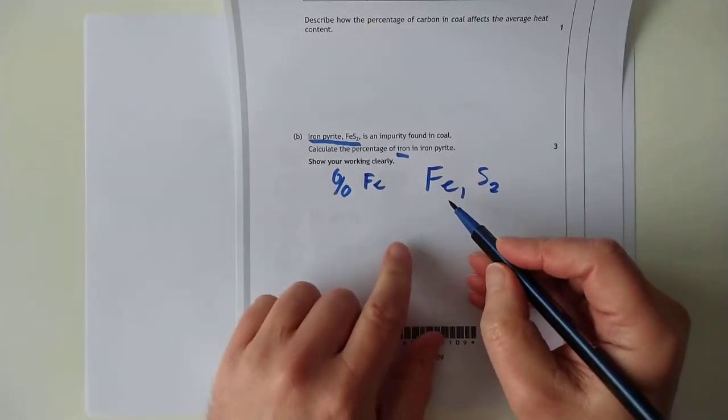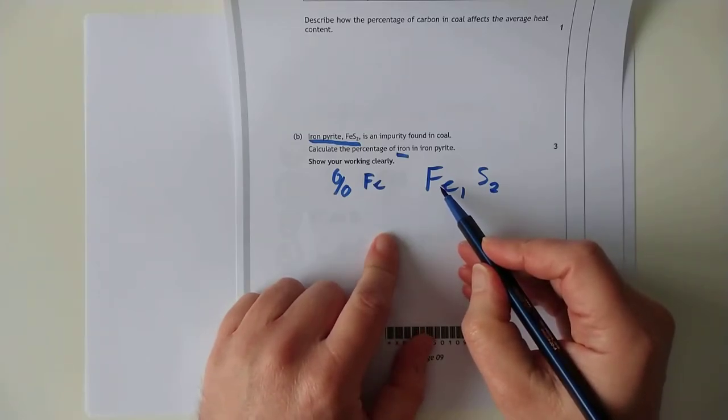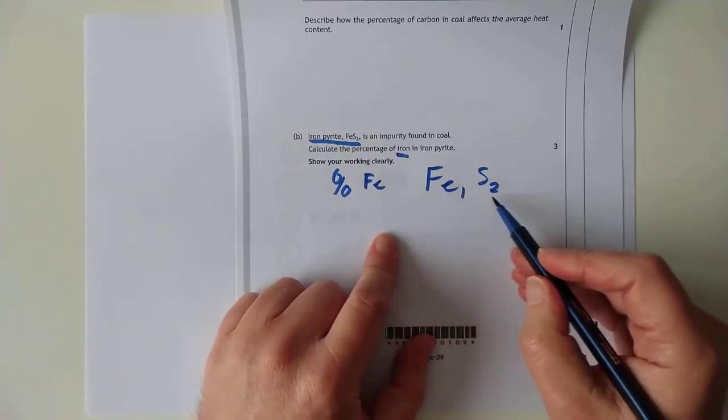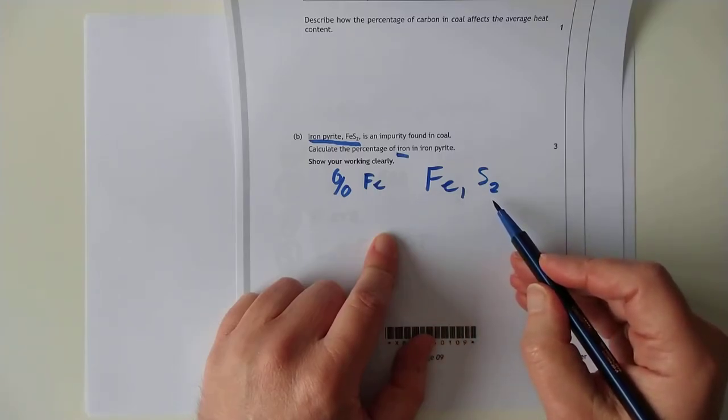So what I need to do is work out the mass of iron, total mass of iron, divided by the total mass of this whole compound, otherwise known as the GFM.